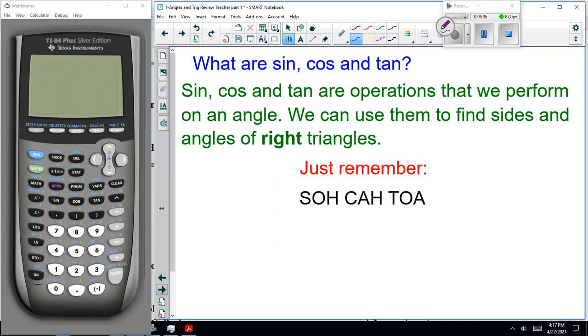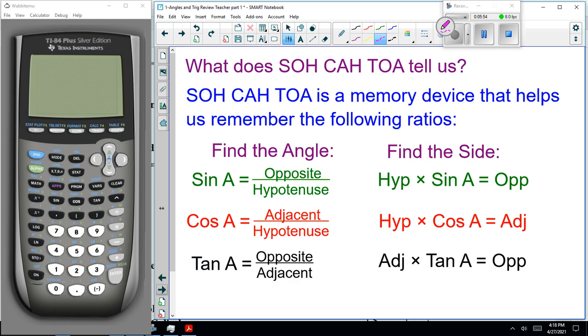So, that leads to the next question. What are sine, cosine, tan? Now, somewhere along the way, you've learned about these. Sine, cosine, and tangent are operations that we can perform on an angle. We use them to find sides and angles of right triangles. So, just remember SOHCAHTOA. Now, what does SOHCAHTOA tell us? SOHCAHTOA is a memory device that helps us remember the following ratios. So, sine is opposite over hypotenuse. Cosine is adjacent over hypotenuse. And tan is opposite over adjacent. Now, notice that's to find the angle. If I ask you to find the side, I want you to write the formulas like this. Hypotenuse times sine of A equals opposite. Hypotenuse times cos of A equals adjacent. And adjacent times tan of A equals opposite.